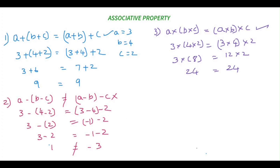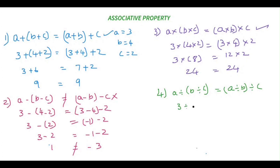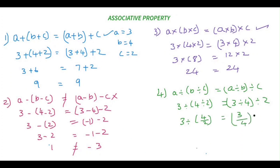Now let's see the fourth property of associative, which is the division operator. The property is: a divided by (b divided by c) equals (a divided by b) divided by c. Using the same values — 3, 4, and 2 — we get 3 divided by (4 divided by 2) equals (3 divided by 4) divided by 2.